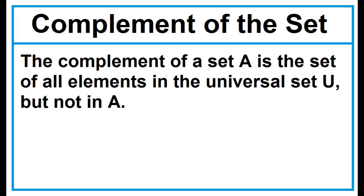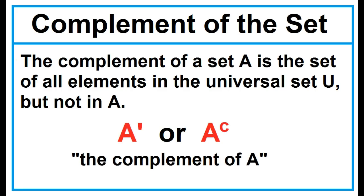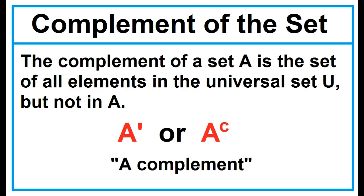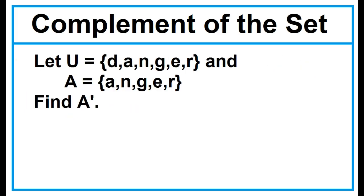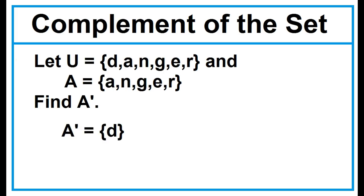Complement of the Set. The complement of a set A is the set of all elements in the universal set U but not in A. The symbols can be read as the complement of A, or A complement. Example: Given the universal set and Set A, find the complement of A. What are the elements of Set U that are not found in Set A? The elements are 4, 5, and 6. Given the universal Set U and Set A, find A complement. Find the elements in Set U that are not found in Set A. It's D. A complement is a set containing D as element.